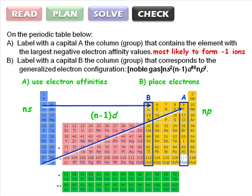Go back and re-read the question to make sure you've answered everything that was asked. And check that you haven't made any careless mistakes, like finding the largest positive electron affinity values instead of the largest negative values. Everything looks good here, so we're done.